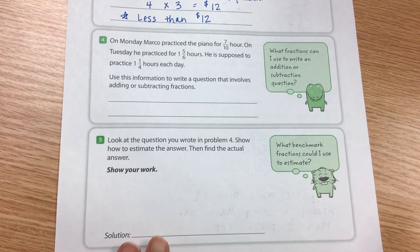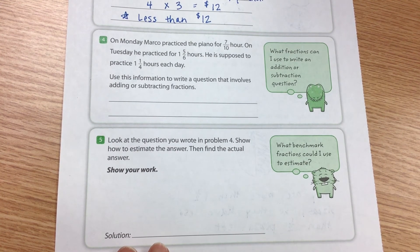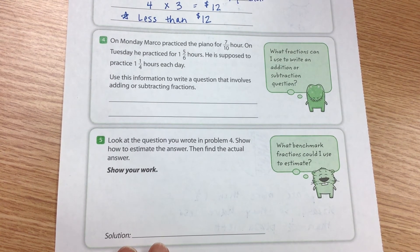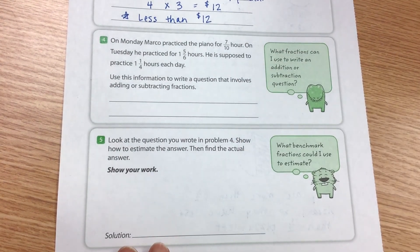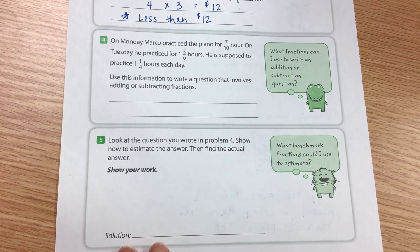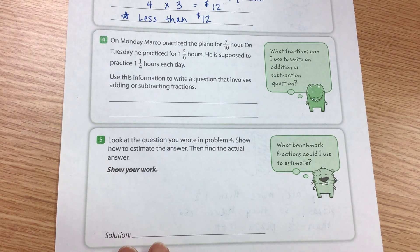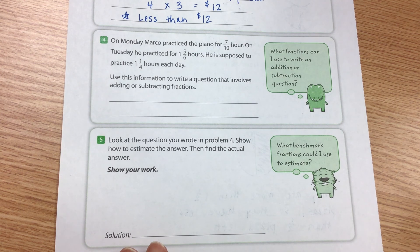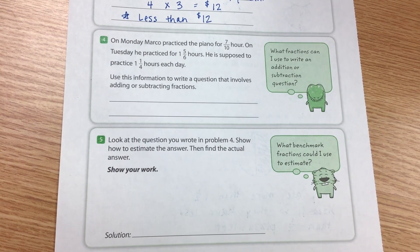Problem number four is one that you're going to have to do on your own. It says on Monday, Marco practiced the piano for seven tenths of an hour. On Tuesday he practiced for one and five sixth hours. He's supposed to practice one and one fourth hours each day. So he was a little short here on Monday, right? Use this information to write a question that involves adding or subtracting fractions. So you could say something like, how much longer should Marco have practiced on Monday, where you could be either adding or subtracting. I'm not going to give that away. Or you could say, how much longer did he practice on Tuesday than on Monday, something like that. So that's just an example.